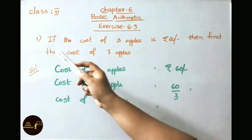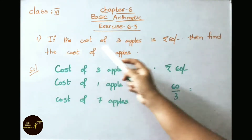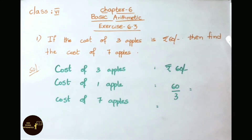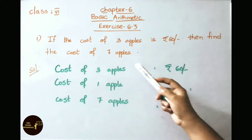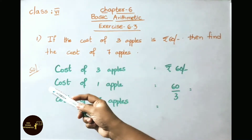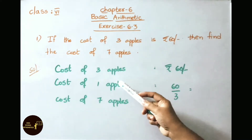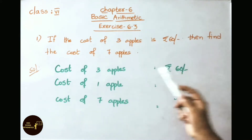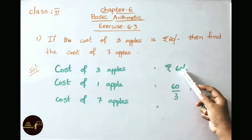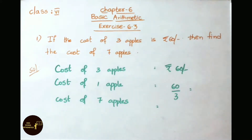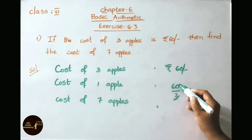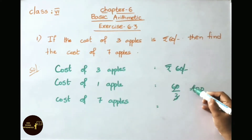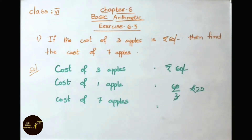Question number 1: if the cost of 3 apples is 60 rupees, then find the cost of 7 apples. Let us see the solution. Cost of 3 apples equals 60 rupees. Cost of 1 apple equals 60 by 3 — 3 times 20 is 60 — so cost of 1 apple is 20 rupees.